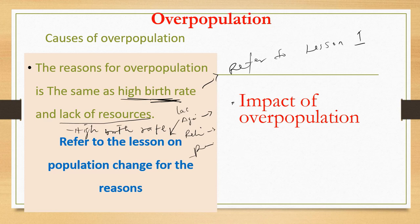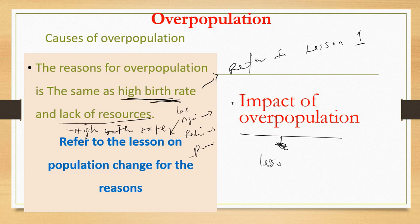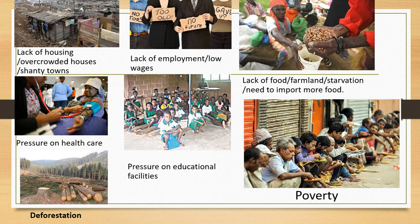Now let's look at the impact of over population. If the population in an area is high, the impact of high population growth rate is the same as the impact of over population, which was covered in lesson two. Let's quickly move into it.